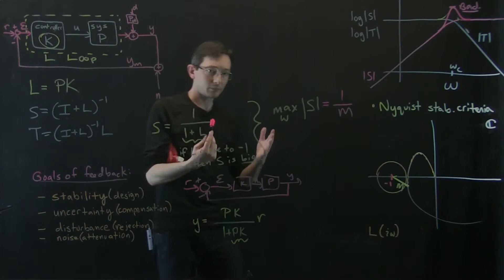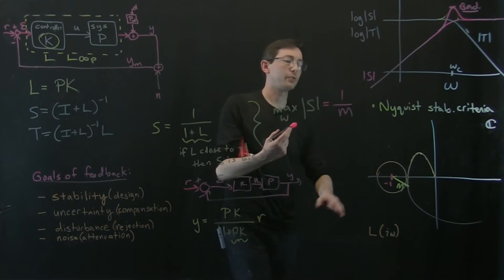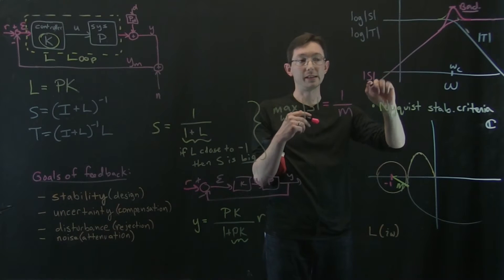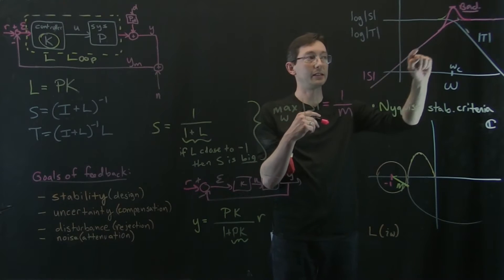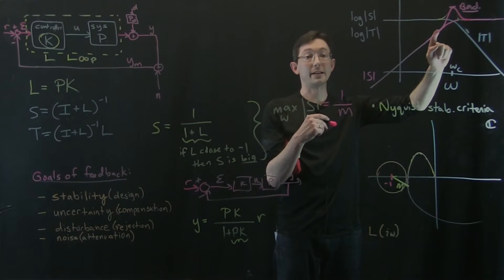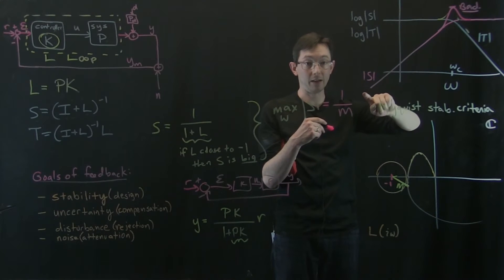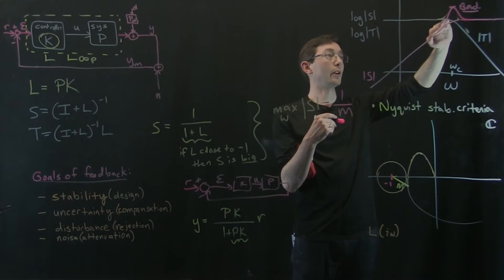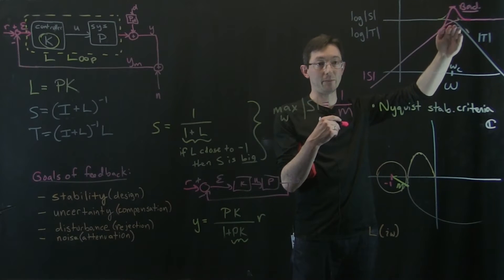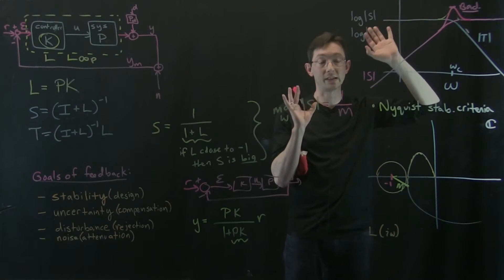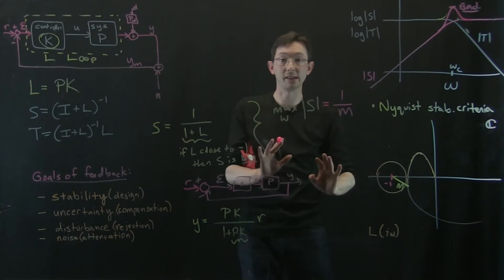We want to design our system so that the sensitivity function has low gain at low frequency, but we also don't want it to ever have a big peak, because that means our system is non-robust.